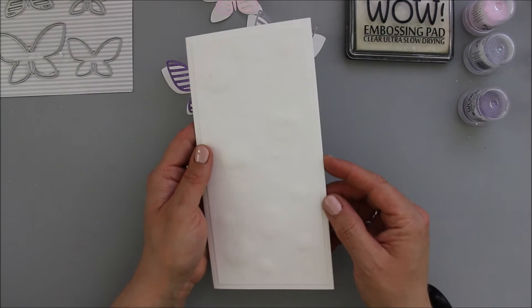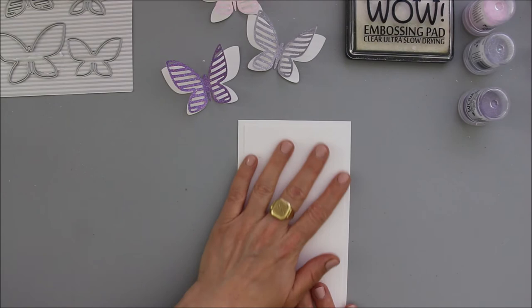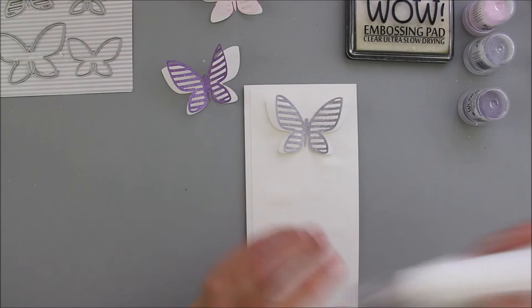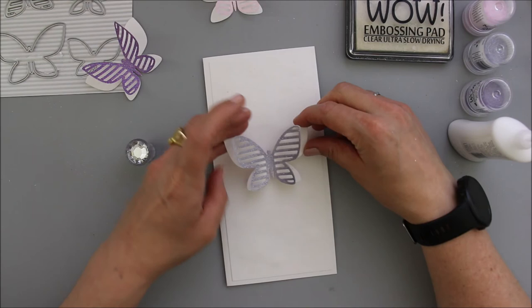And now it's time to glue my butterflies down. I'm trying to add as much dimension as possible and I'm just folding the wings to the middle of the butterflies which makes the wings lift, and I'm gluing just the bodies of the butterflies to the card.